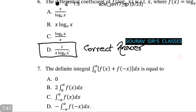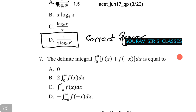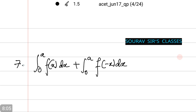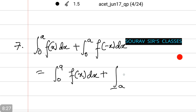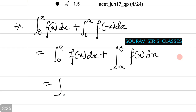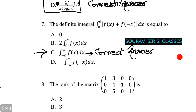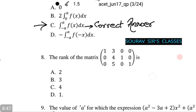The next question asks us to find the definite integral from 0 to a of [f(x) plus f(minus x)] dx. Breaking it down: this equals the integral from 0 to a of f(x) dx plus the integral from 0 to a of f(minus x) dx. The second term equals the integral from minus a to 0 of f(x) dx. Combining, this equals the integral from minus a to a of f(x) dx. Thus option c is the correct answer.